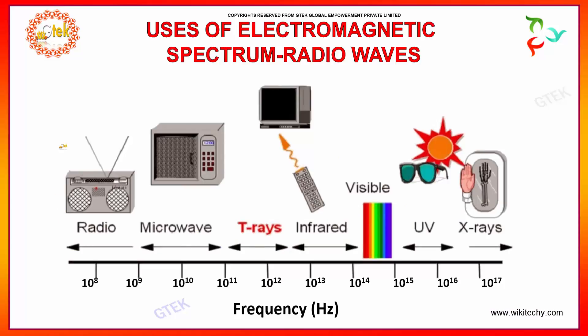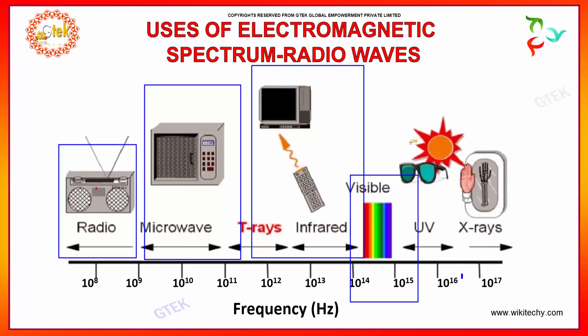Radio waves are used for radio signals, microwaves for microwaves, and infrared for controlling TVs and televisions. UV rays are emitted from the sun, and X-rays are used for medical applications.